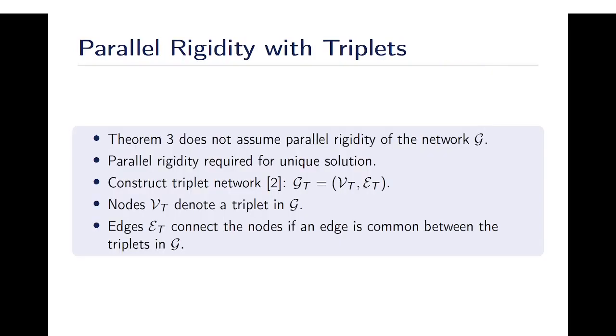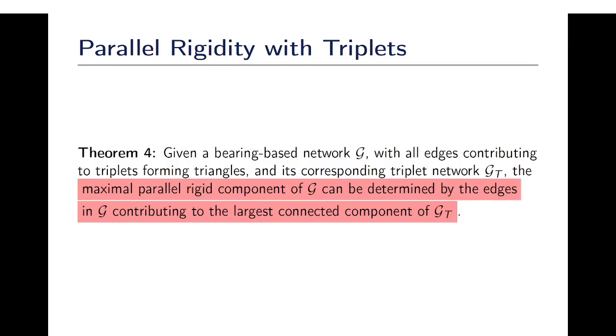But this theorem does not assume parallel rigidity of the network which is required for uniqueness of the solution. So, we construct the triplet network where each node represents a triplet and each edge represents a common edge between the triplets in the original network. Given this setup, the original network and its corresponding triplet network, the maximum parallel rigid component can be determined by the edges in the original network contributing to the largest connected component of the triplet network.